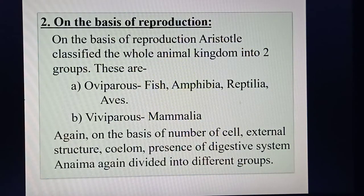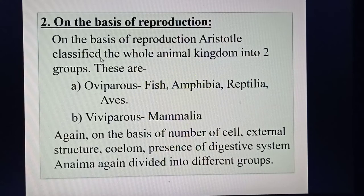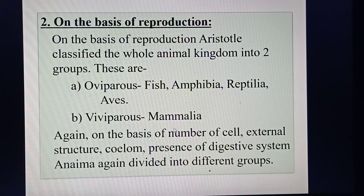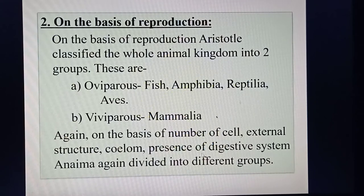The second classification system is on the basis of reproduction. Aristotle classified the animal kingdom into two groups: oviparous and viviparous. Oviparous animals — fish, amphibia, reptilia, and birds — reproduce through eggs, meaning offspring come out by hatching the egg. Viviparous animals, such as mammals, reproduce through birthing. Animals were further divided on the basis of number of cells, external structure, coelom, and presence of digestive system.